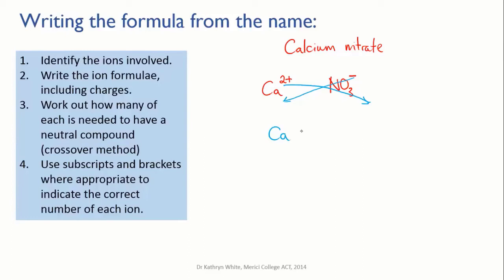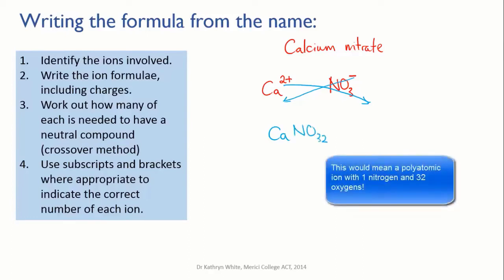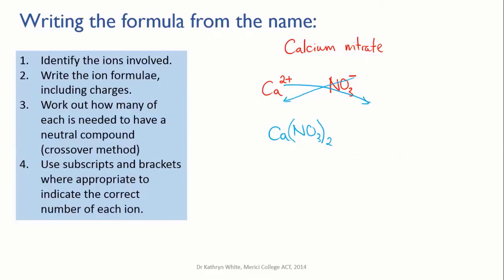Now we can't just write NO3 2 like this. This makes no sense at all. What we need to indicate is that we need two whole nitrate ions, and the way we do that is to put them in brackets and to put a little two outside, which means two lots of everything that's inside the bracket.